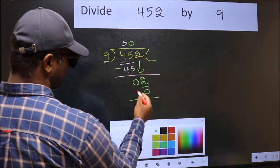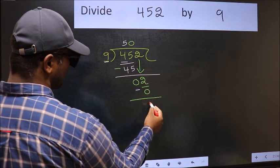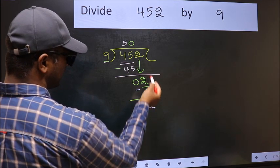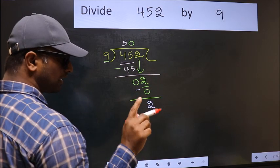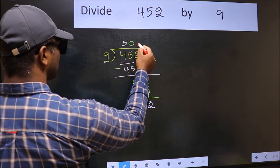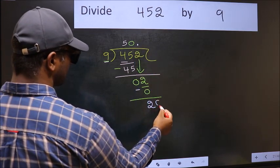Now you should subtract. 2 minus 0, 2. Over here, we did not bring any number down, and 2 is smaller than 9. So now you can put a dot and take 0.